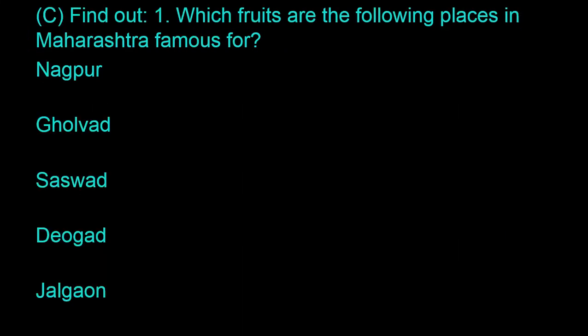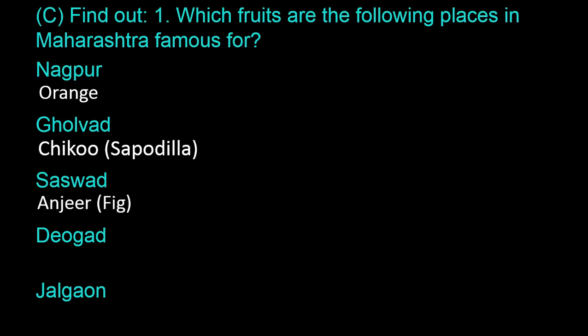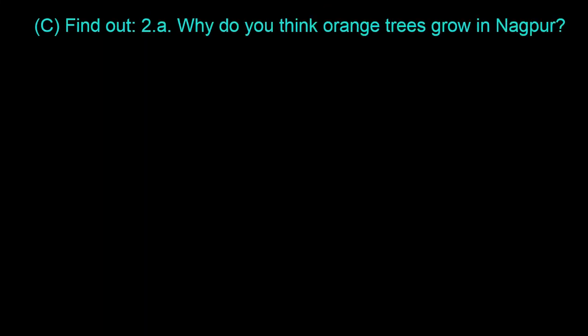Question C — Find Out. 1. Which fruits are the following places in Maharashtra famous for? Nagpur is famous for orange. Golwad is famous for Chiku (sapodilla). Saswad is famous for fig. Devjad is famous for Alfonso mango. Jalgaon is famous for banana. This question is based on data collection and class activity. I have written a few points based on my search. You can have your own points or add more points to the list.